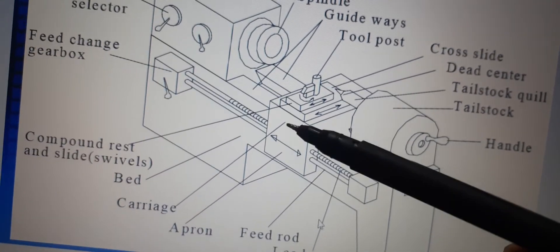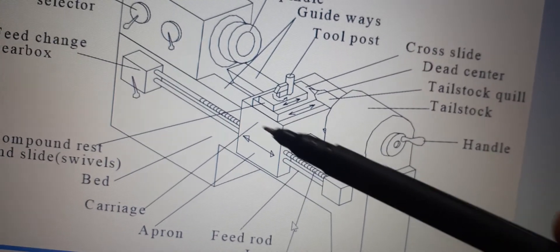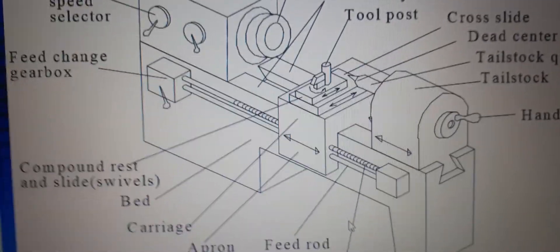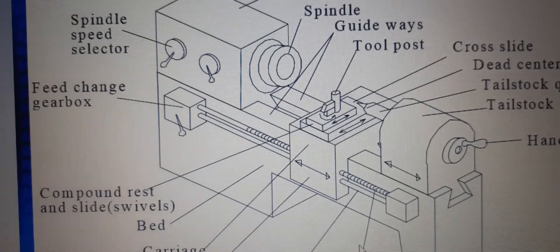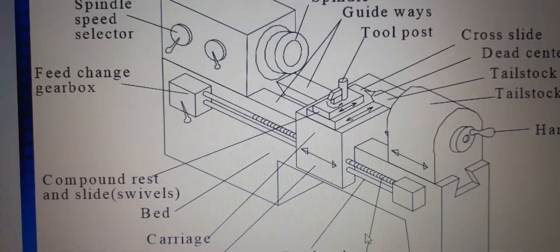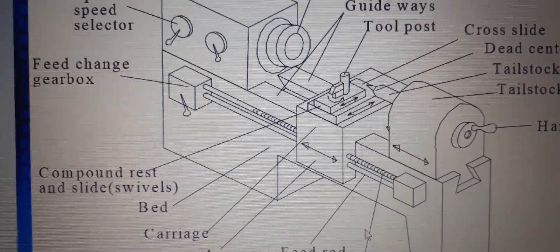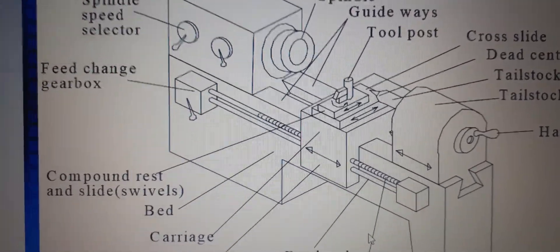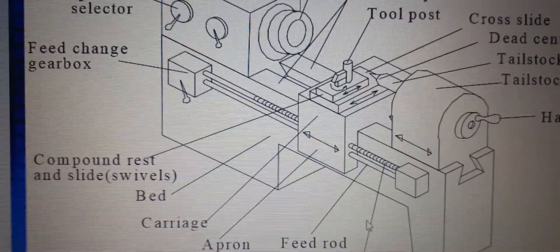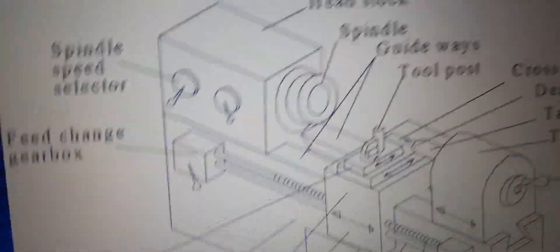The carriage, which you can see here, can be moved as per the requirement of the job. The carriage of the lathe provides tool support, cutting, feeding, and screw cutting actions. It moves parallel to the lathe center axis, supporting sub-parts such as saddle, cross slide, tool post, compound rest, apron, etc.